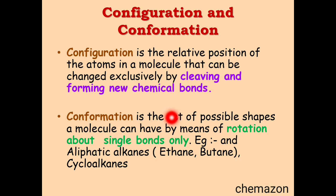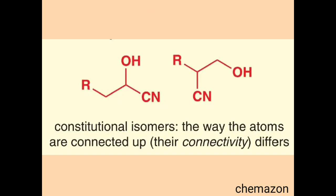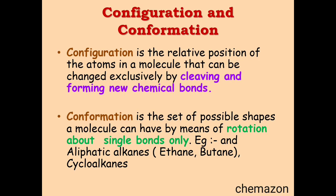What is conformation? We had seen a little bit of conformation in molecules like biphenyls, where two phenyl rings are attached by a carbon-carbon single bond, and there is free rotation of groups in three-dimensional space. Conformation is a set of possible shapes of a molecule by means of rotation about single bonds only. Examples of conformations we will see in later videos include aliphatic alkanes such as ethane, butane, and cycloalkanes.